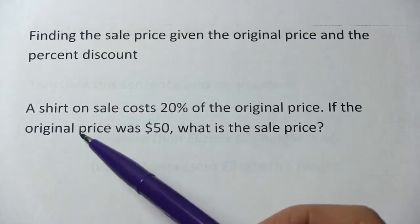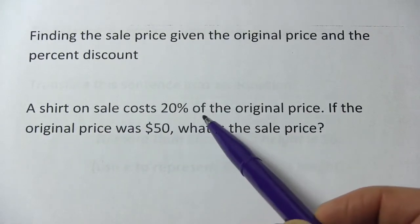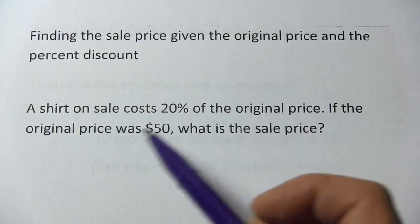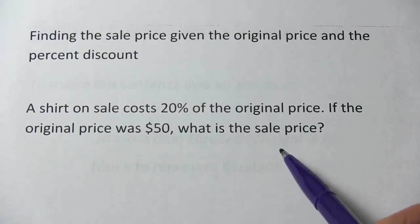Let's look at this first one. It says a shirt on sale costs 20% of the original price. If the original price was $50, what is the sale price?